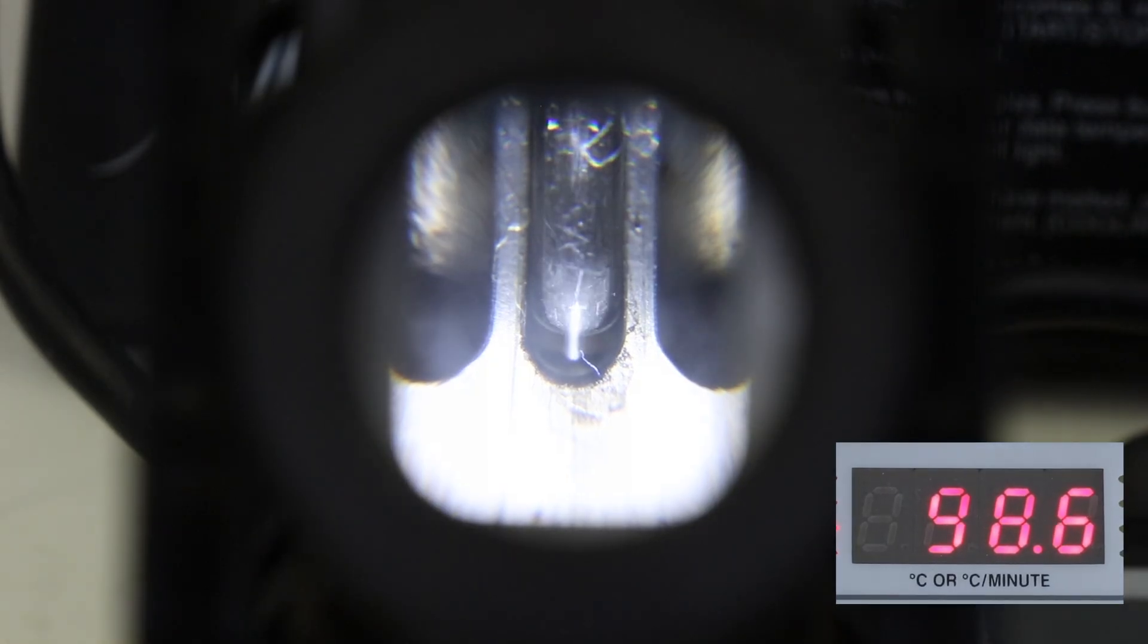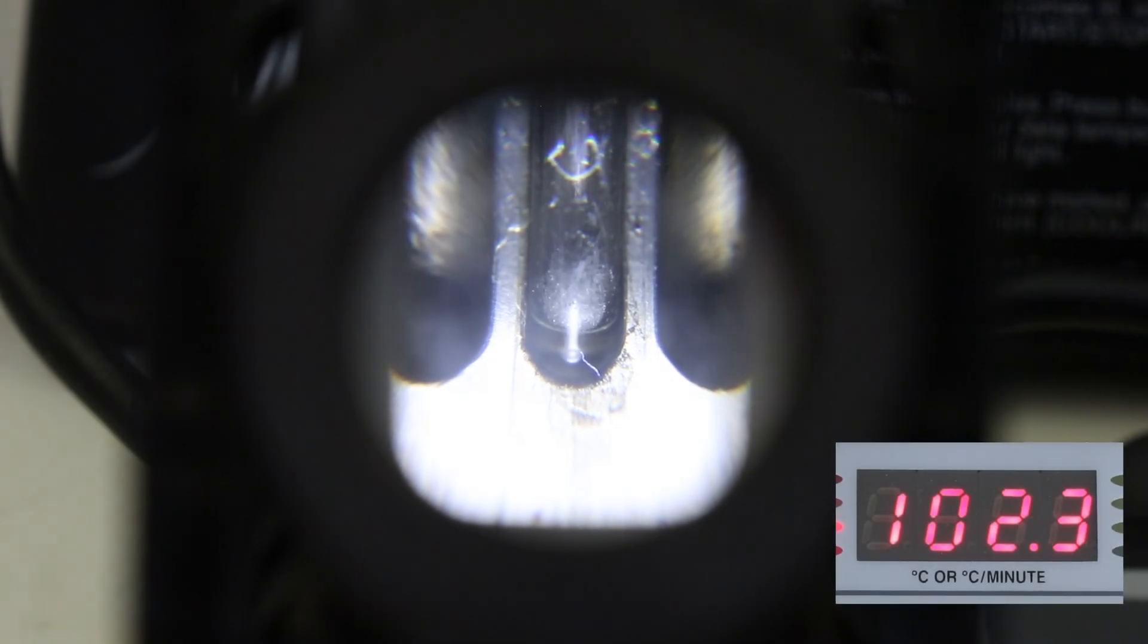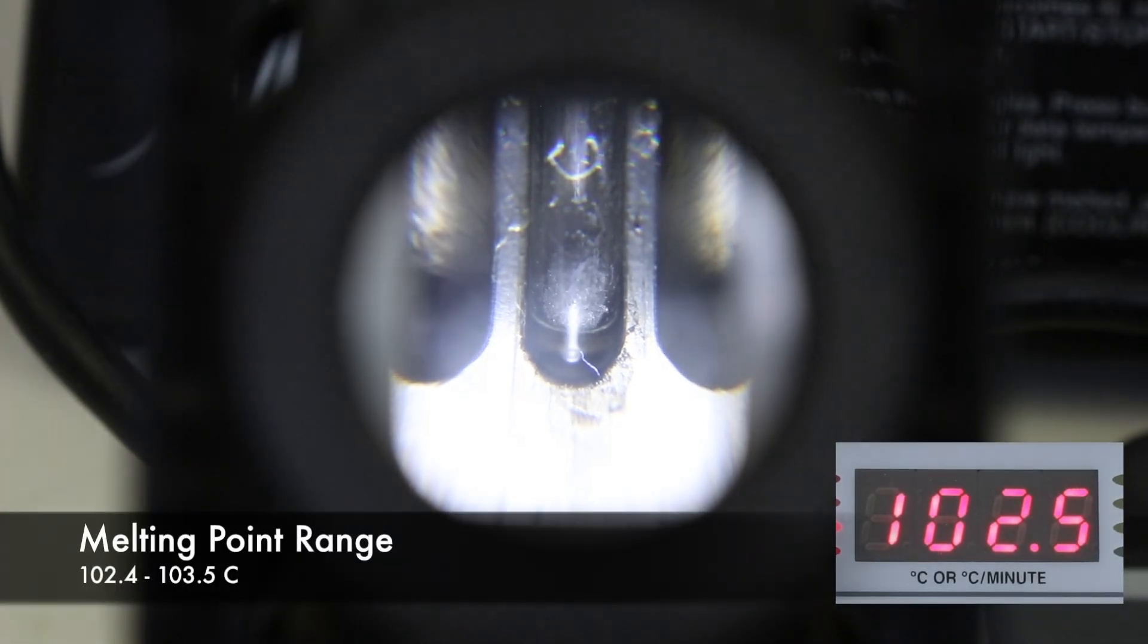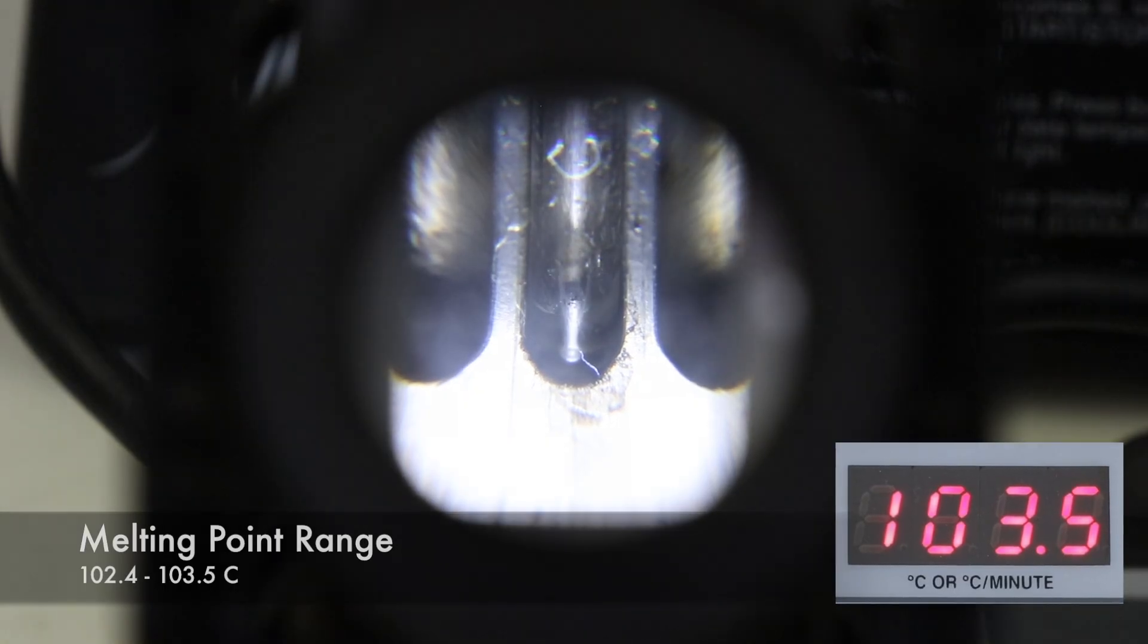I'll take a melting point starting a few degrees lower just in case there is contamination, but it looks like the solid starts melting around 102.4 and finishes around 103.5 degrees Celsius, so there probably is some contamination in there and we can check for that on the IR now.